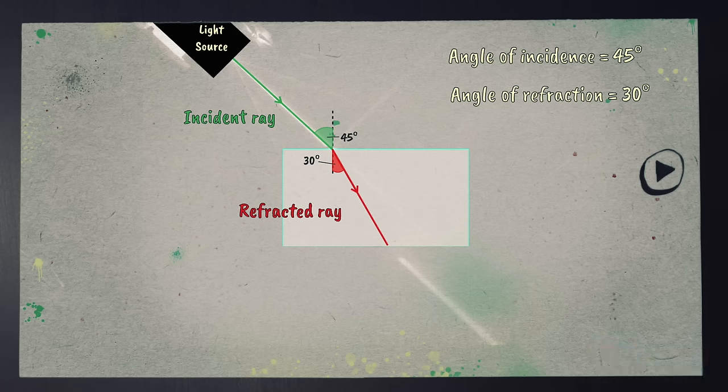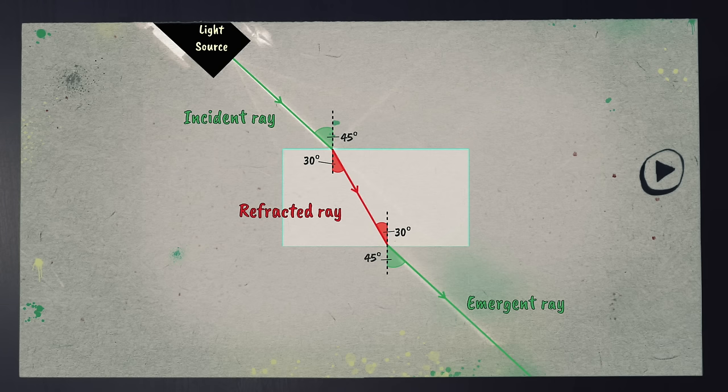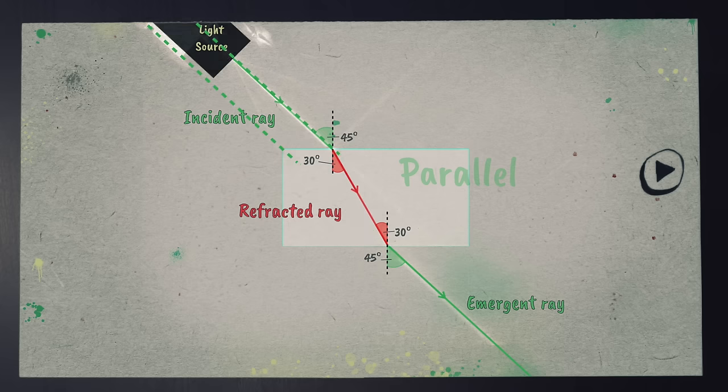Because the light then exits the plastic block and returns to air, it speeds up. The emergent ray exits the plastic block at the same angle as the incident ray. In a case like this, the incident ray and the emergent ray will always be parallel to each other.